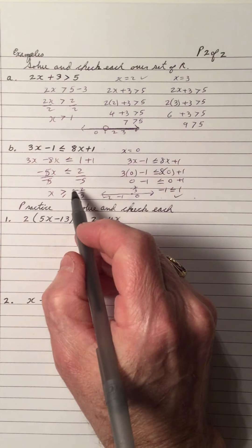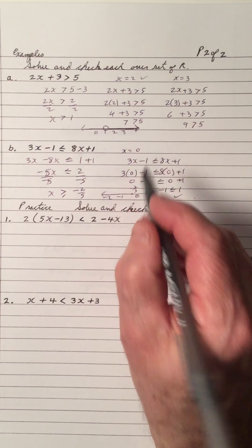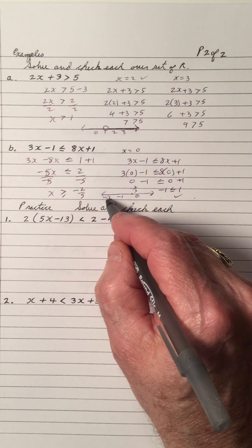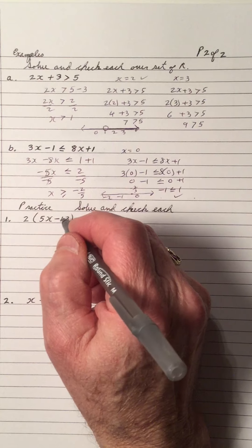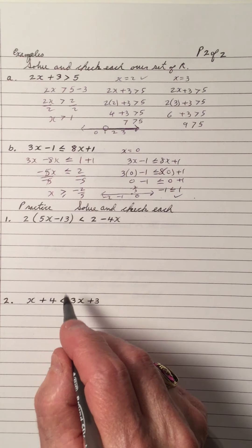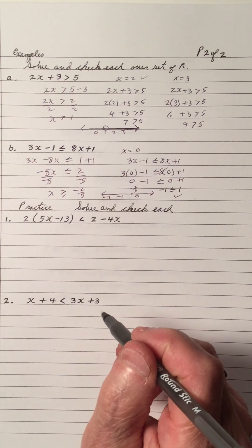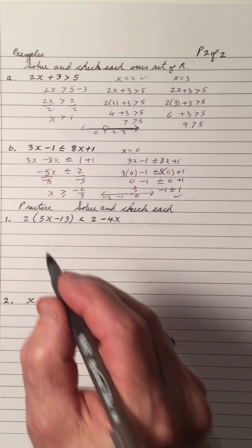So 0 is the solution. So notice if we did not change this inequality around, we would have taken numbers on the other side, which would have been negative 1, negative 2, and they would have been wrong. So notice we switched the inequality because we divided. And practice means pause the video and work these out to see if you're going to get the answer. And try one solution to see if you're right. Here we go.